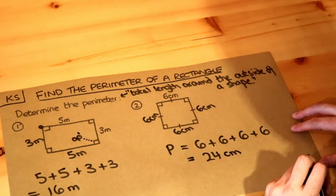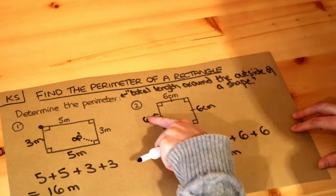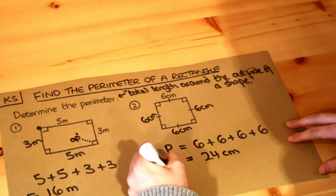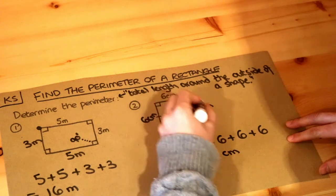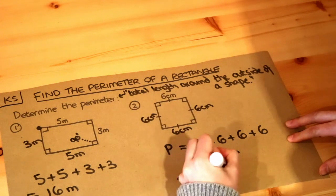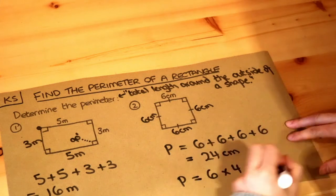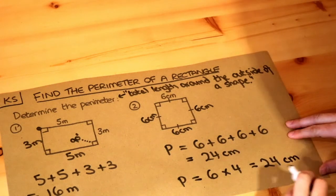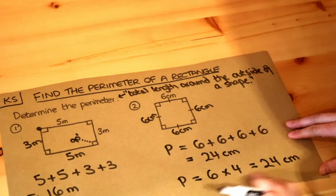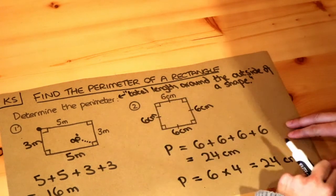You might think, well there's a quicker way of doing this. I've got 6 but 4 times. So instead, you could have written 6 times 4, because we want 4 lots of 6, and that would again be 24, and the unit is again centimeters. So we could have done it this way instead, by just timesing the 6 by 4.